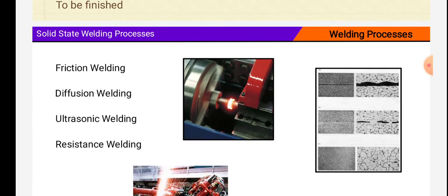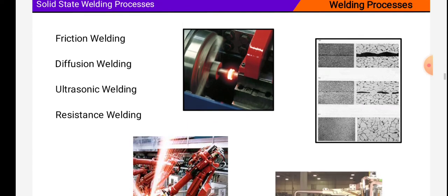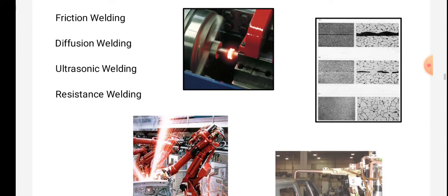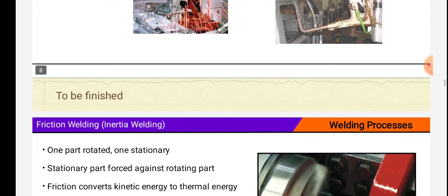Solid State Welding Processes. In this: Friction Welding, Diffusion Welding, Ultrasonic Welding, Resistance Welding is shown in figure. These are the welding processes.